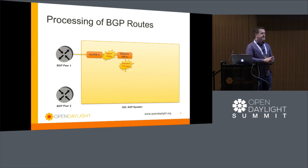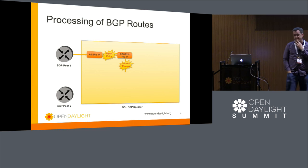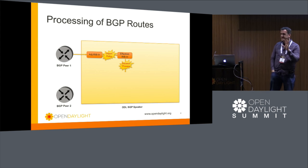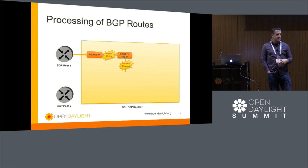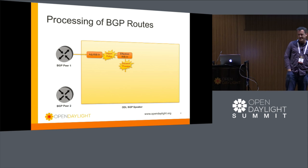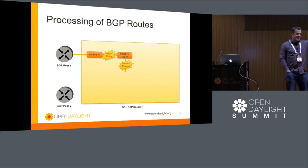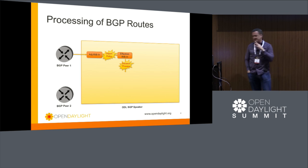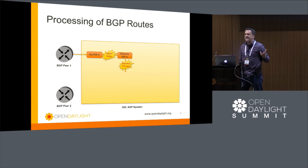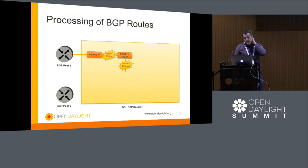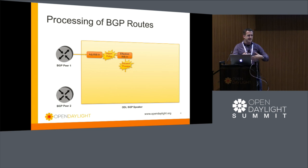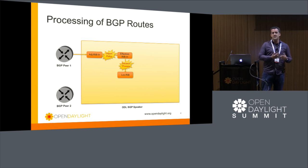From the import policy we build an effective RIB — the routes that have passed policy. On a router this is where you'd apply a route policy to filter out routes you didn't like. The next part is the decision process. Those familiar with BGP will remember having the BGP decision process chart — steps 1 through 13 — printed out on their cubicle wall. That process determines which routes make it into the loc-RIB and which ones don't.